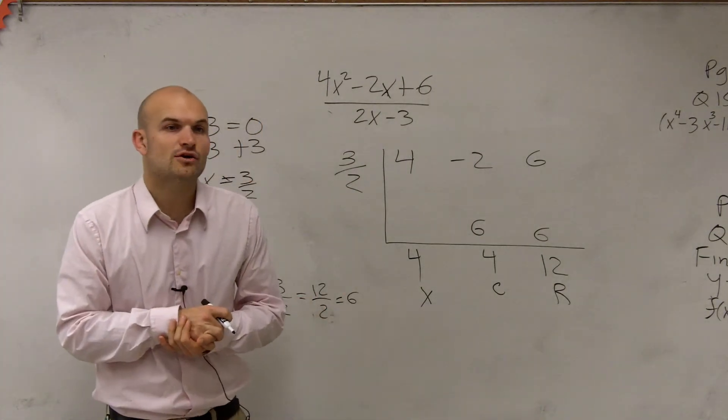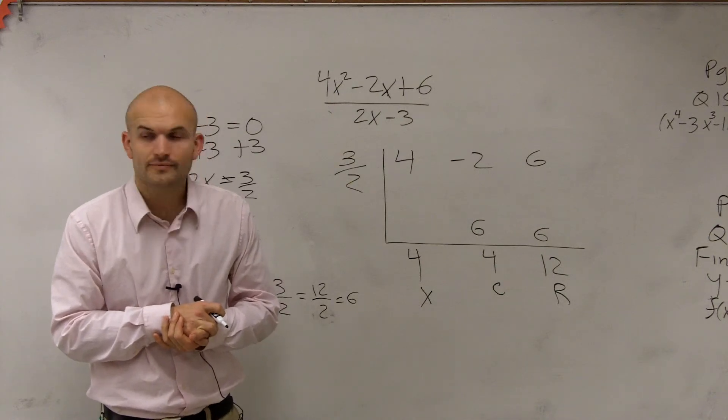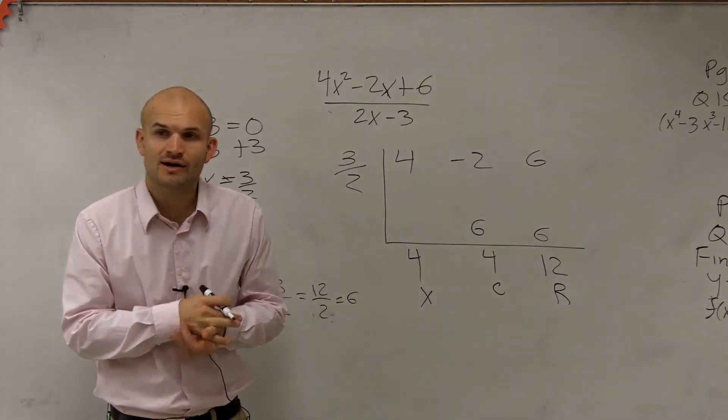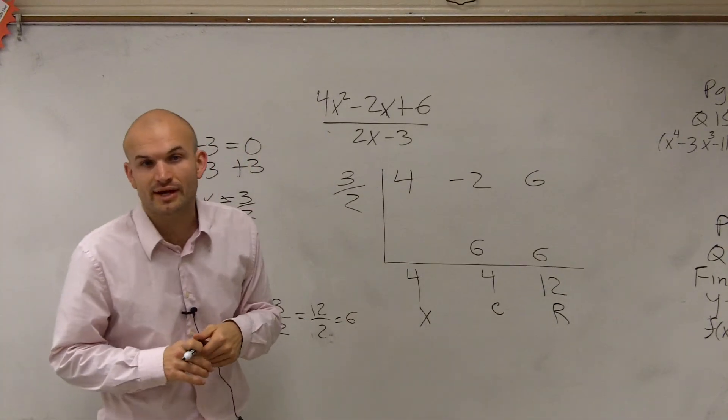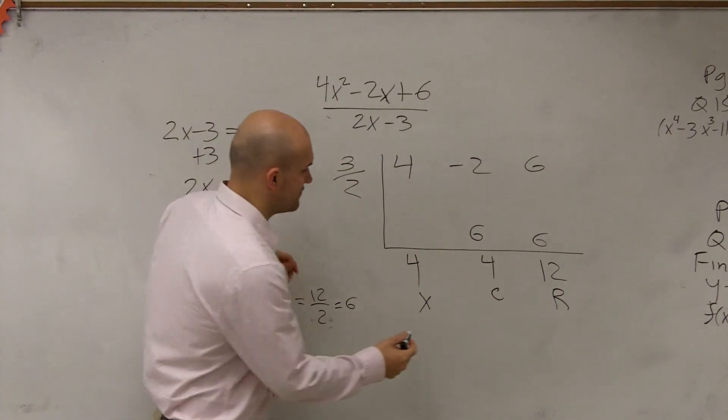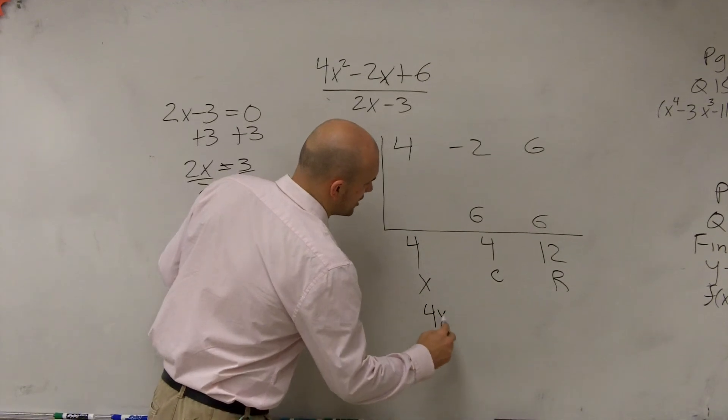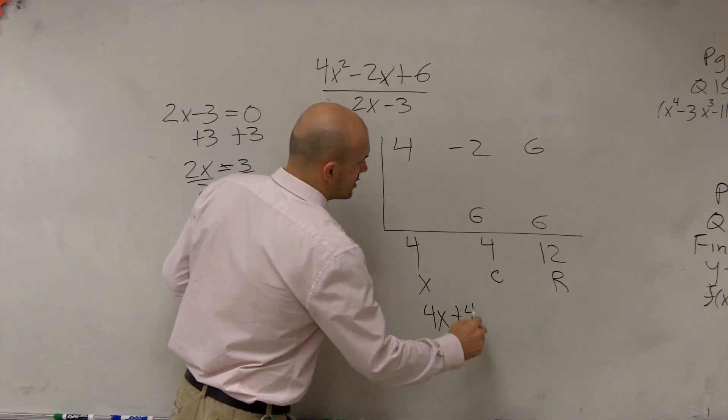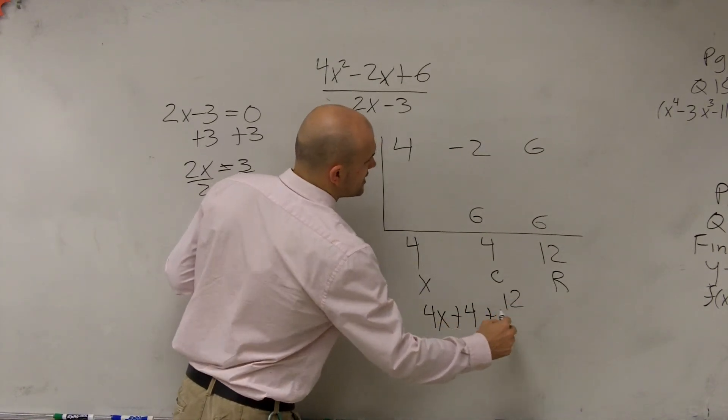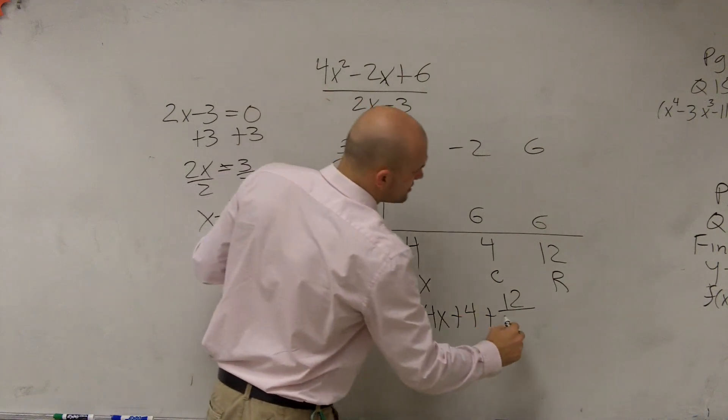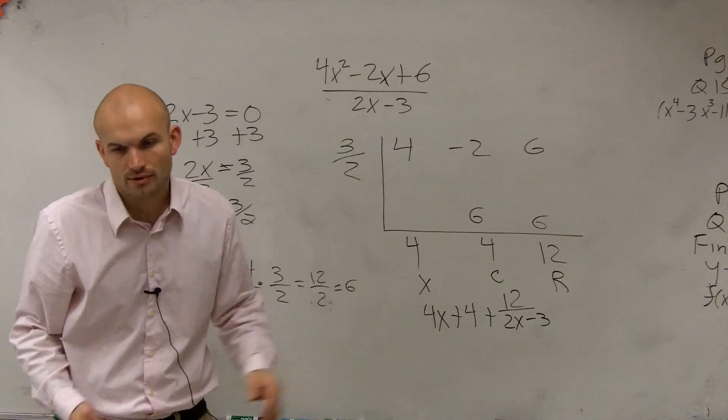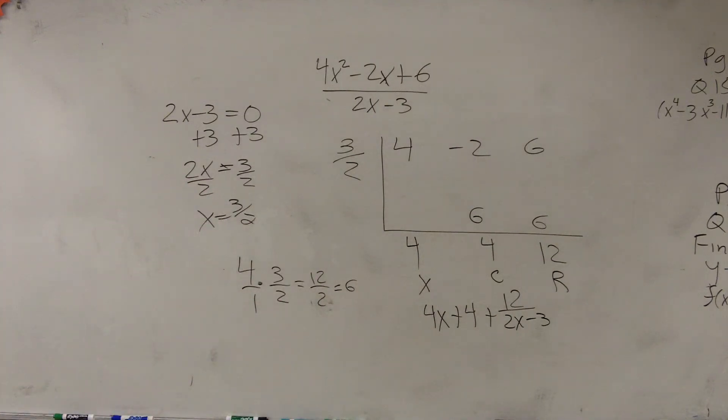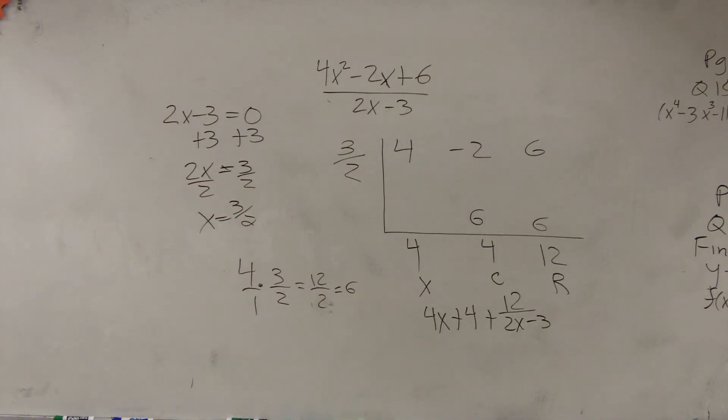So when looking back over at it, now to write our answer, we know that since we have a remainder, it's not going to evenly divide into there. So what we're going to have is our final solution is going to be 4x plus 4 plus you take your remainder and divide it by your divisor. So that would be your final solution. Now, I'm going to have a little litmus test.